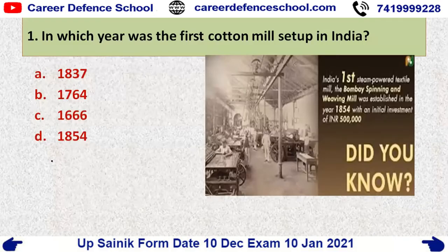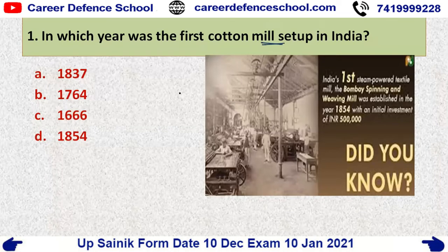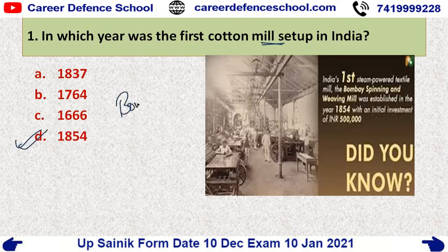In which year was the first cotton mill set up in India? The options are: in 1837, in 1764, in 1666, or in 1854. The correct answer for this is option D — in 1854, the first cotton mill was set up in Bombay.